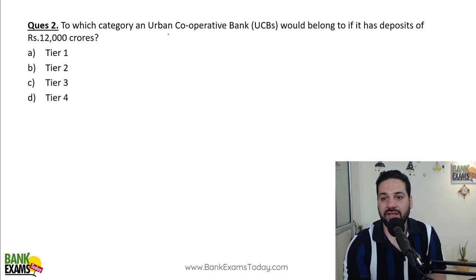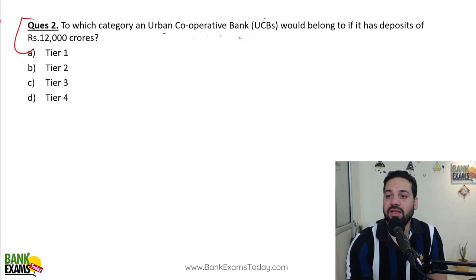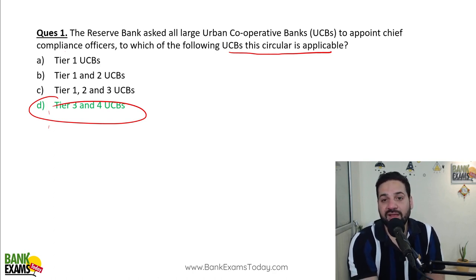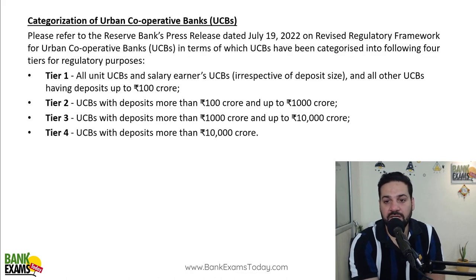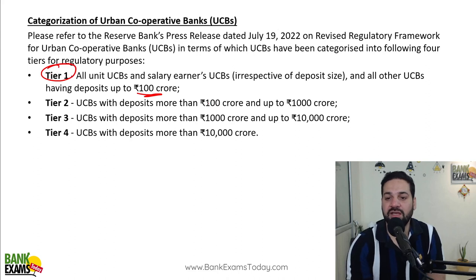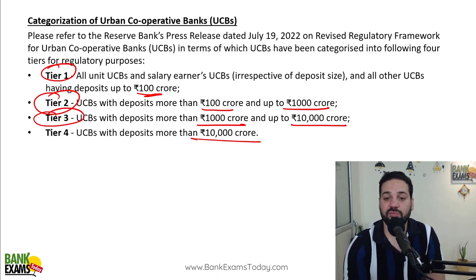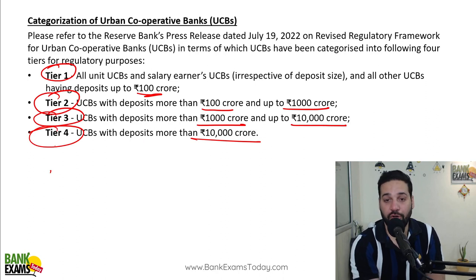To which category would an urban cooperative bank belong if it has a deposit of 12,000 crore? The categorization is important. Let me show this table. If the deposit size is up to 100 crore, it is a Tier 1 UCB. If more than 100 crore but less than 1,000 crore, it is Tier 2. If more than 1,000 crore but up to 10,000 crore, it is Tier 3, and if the deposit is more than 10,000 crore, it is a Tier 4 urban cooperative bank.